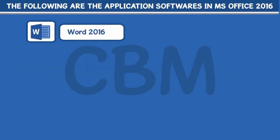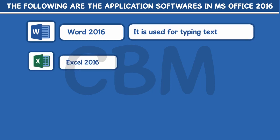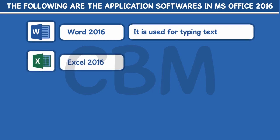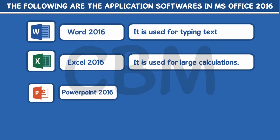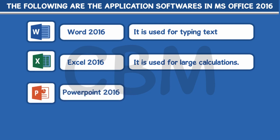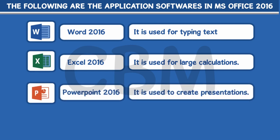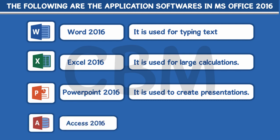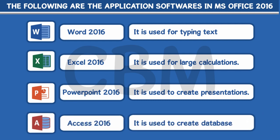Word 2016: it is used for typing text. Excel 2016: it is used for large calculations. PowerPoint 2016: it is used to create presentations. Access 2016: it is used to create a database.